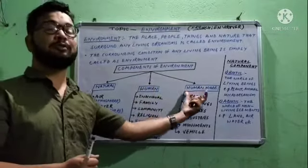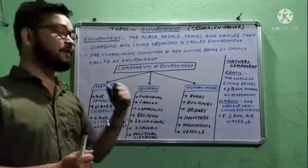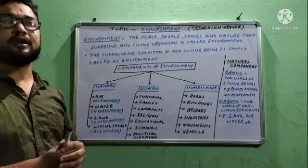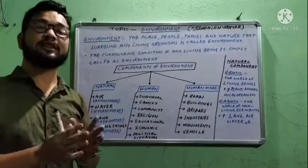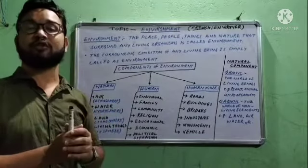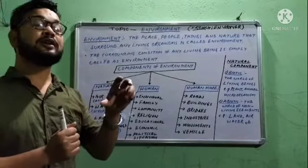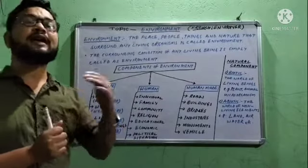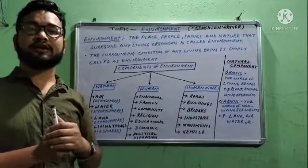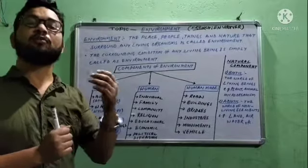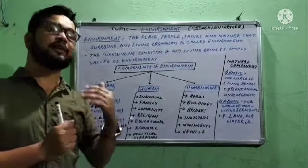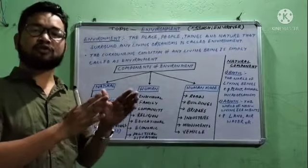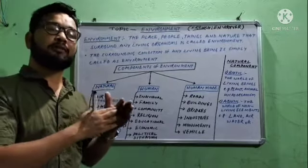Don't be confused between human and human-made. The first component is the natural component. If you see your surroundings, you will see some natural things which are created by nature, not by human beings — these are the natural components of environment. For example, air — you can feel air in your surroundings. Water is created by nature. Land and soil are also natural components of environment.